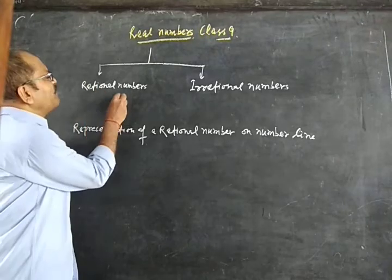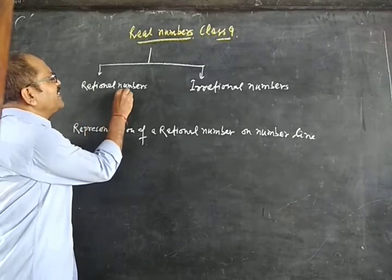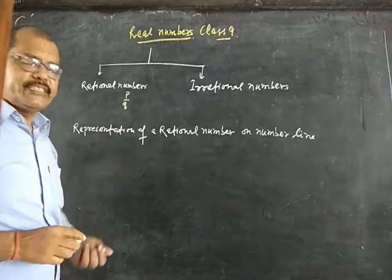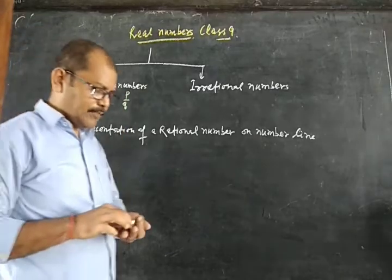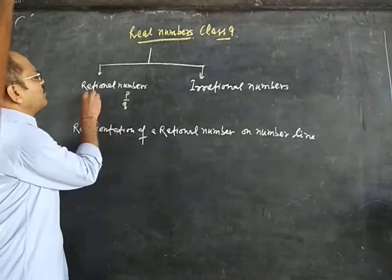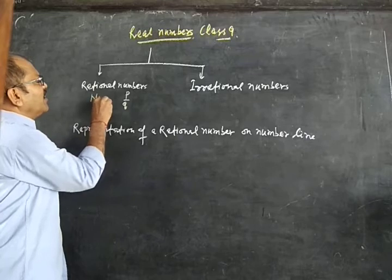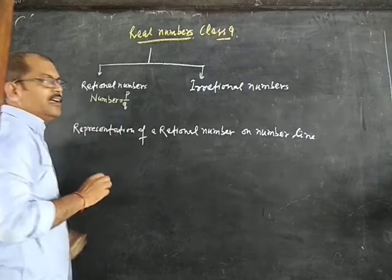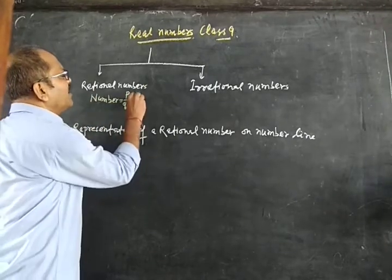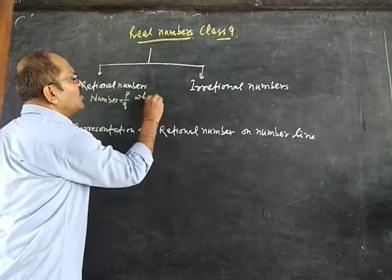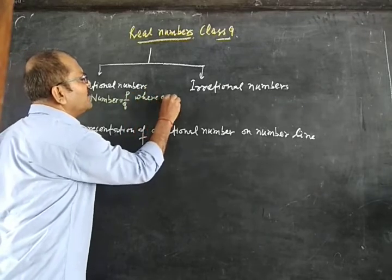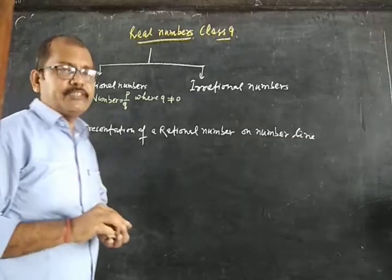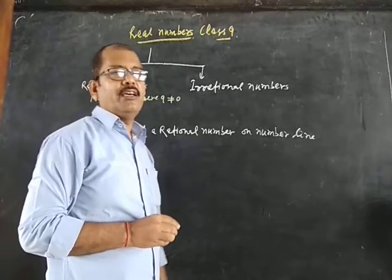A number which can be written in the form of p/q, where q does not equal zero — then such a number is said to be rational.